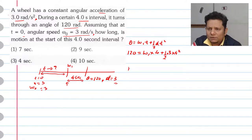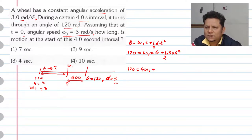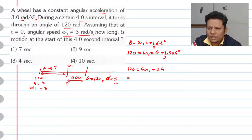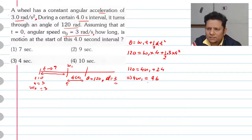So left hand side aapki yeh ban gayi: 120 is equal to 4 omega 1, plus yeh banega 16 — 16 ka half karenge 8 — 8 × 3 = 24. Which implies aapka 4 omega 1 is equal to 120 minus 24, yaani ki banega 96. Which implies omega 1 jo hai, woh jab hum divide karenge, yeh aa jaega 24 radian per second.